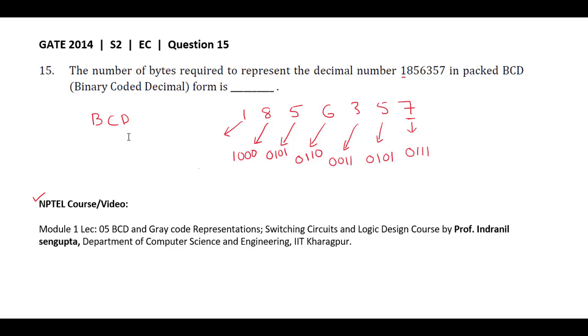For 1, the equivalent four-bit binary representation is 0001. Now, the question asks for the number of bytes required to represent this decimal number in BCD format. One byte equals 8 bits - this is one byte.